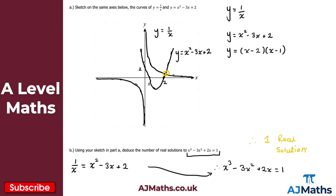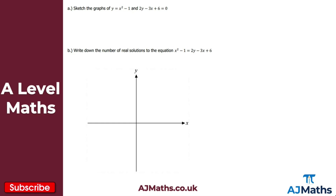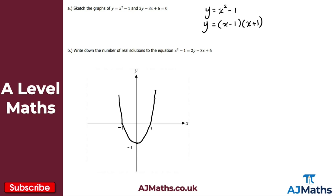Moving on to question 2, which follows the same structure. For part A, let's sketch the quadratic y equals x squared minus 1. This is the difference of two squares: y equals x minus 1 times x plus 1. So I have solutions at x equals minus 1 and x equals positive 1, and it cuts through the y-axis at minus 1. That gives us our upward-opening parabola.